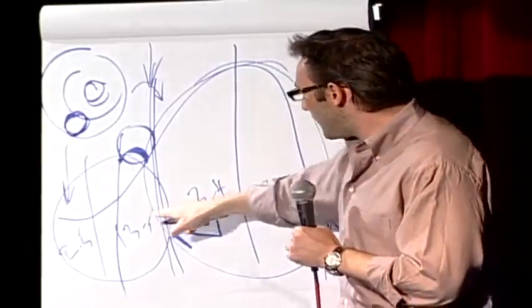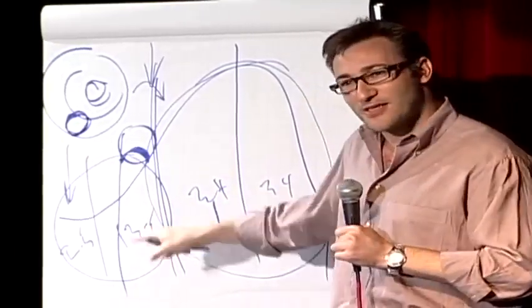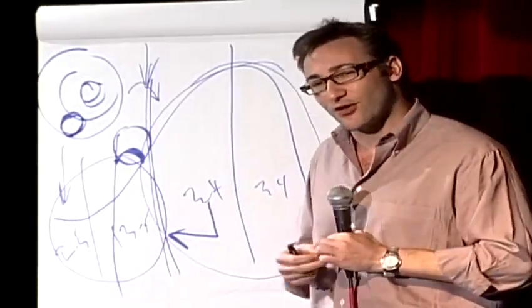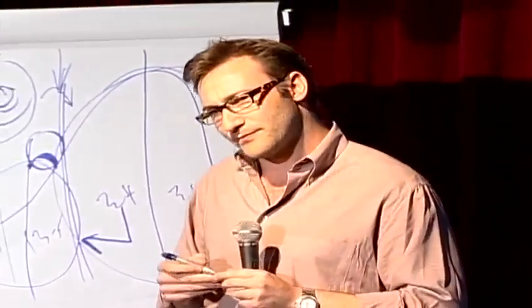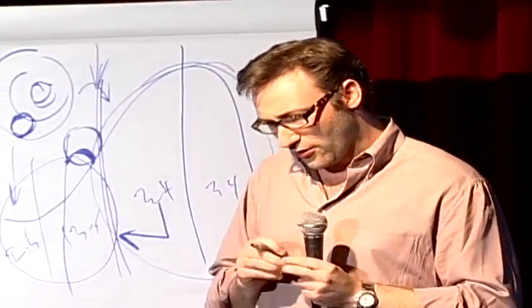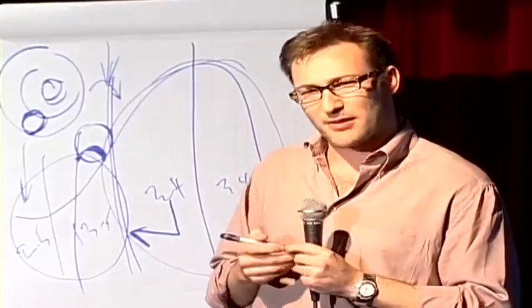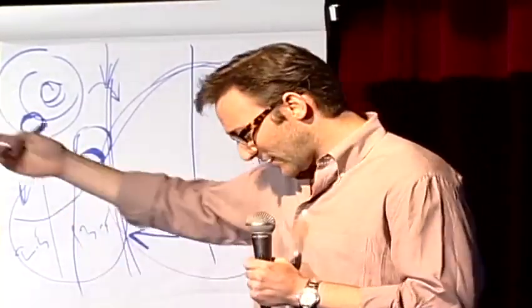The reason that person bought the iPhone in the first six hours or stood in line for six hours was because of what they believed about the world and how they wanted everybody to see them. They were first. People don't buy what you do, they buy why you do it. So let me give you a famous example, a famous failure and a famous success of the law of diffusion of innovation. First, the famous failure. It's a commercial example. As we said before, the recipe for success is money and the right people and the right marketing conditions, right? You should have success then. Look at TiVo.